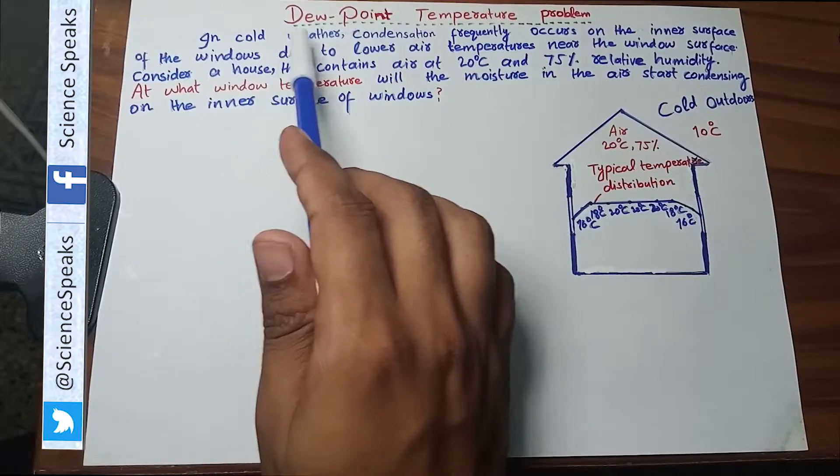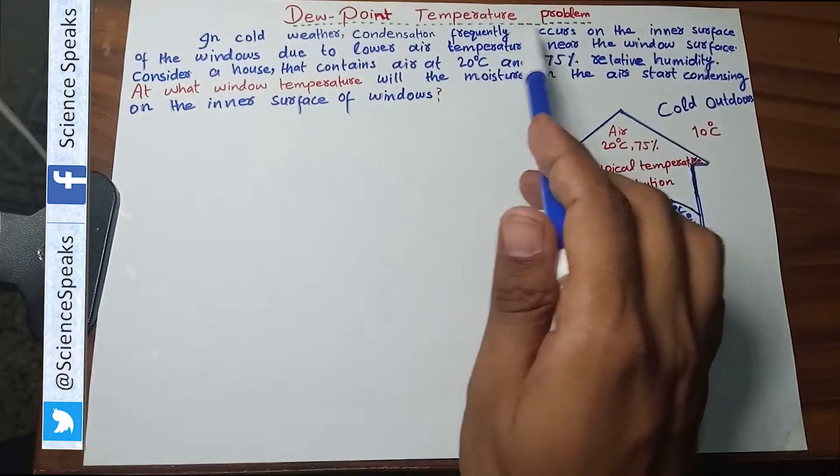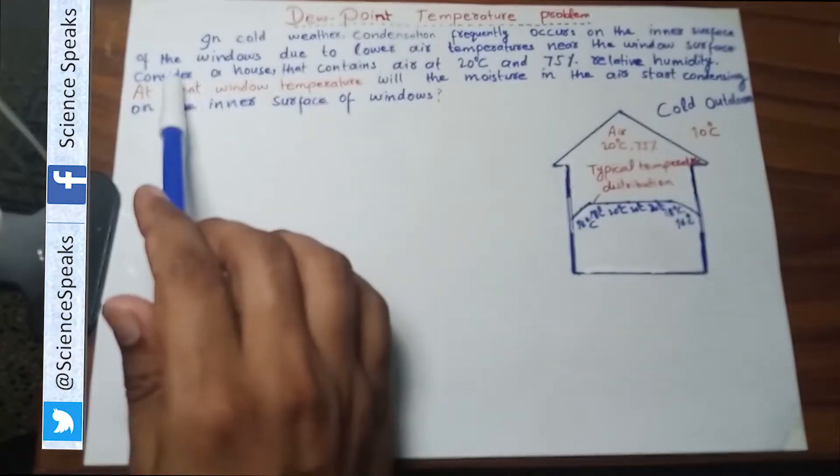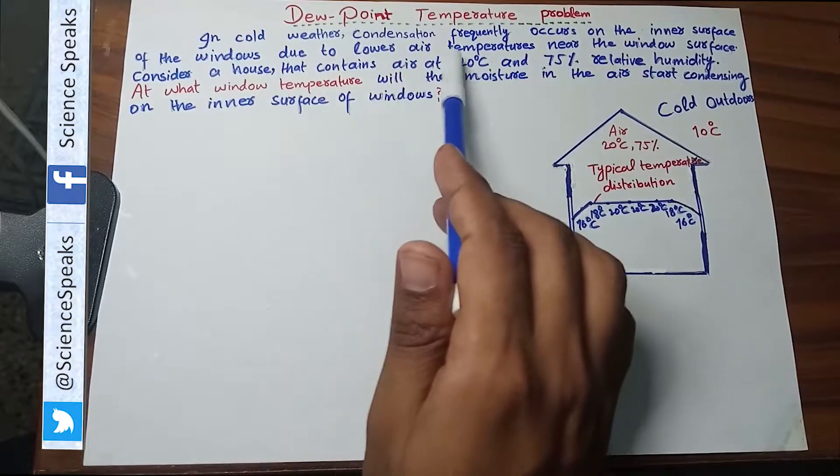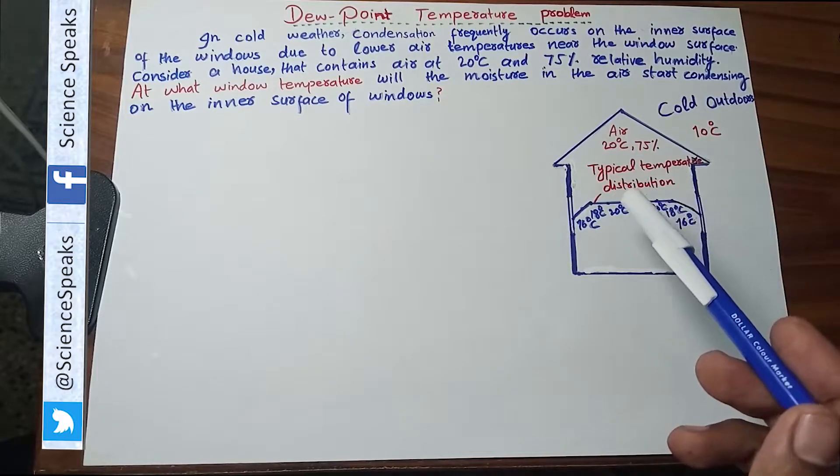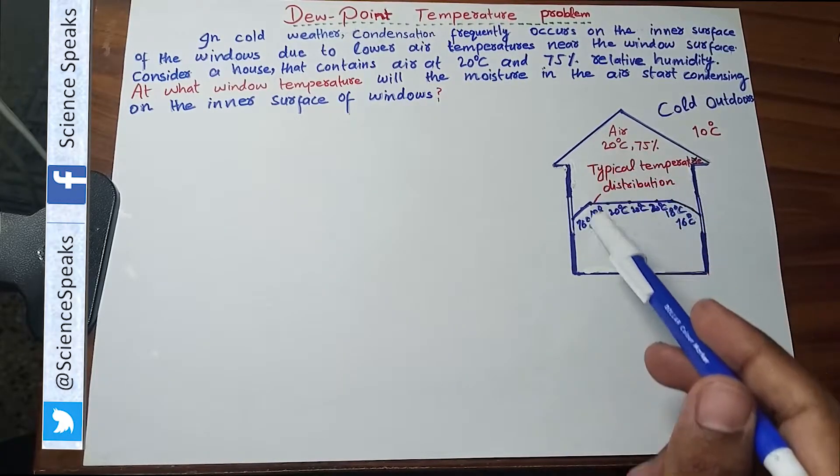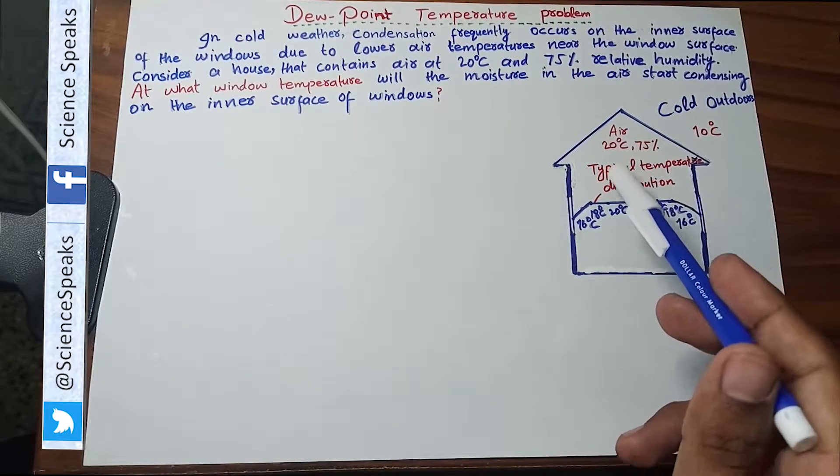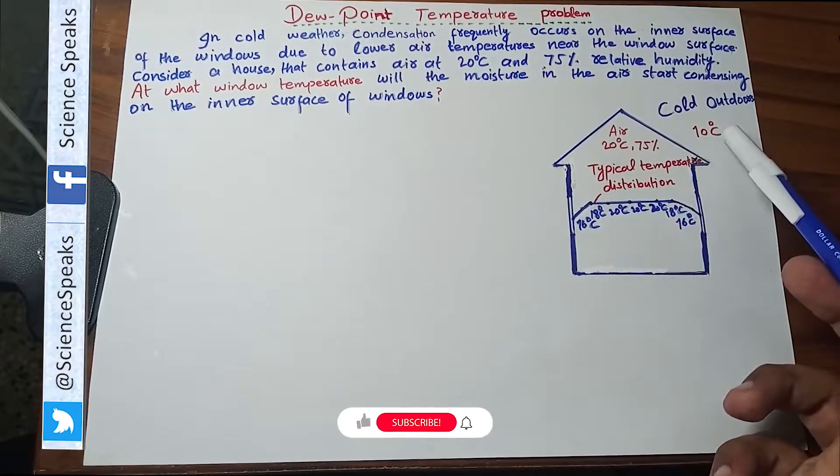First I read the statement for you: in cold weather condensation frequently occurs on the inner surface of the windows due to lower air temperature near the window surface. In winter you heat up the inside of the house. Your inside temperature is higher than the cold outside.